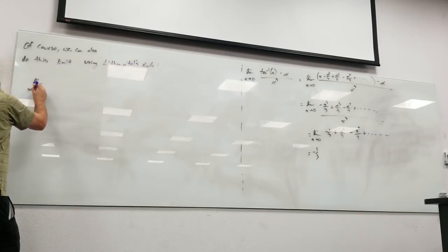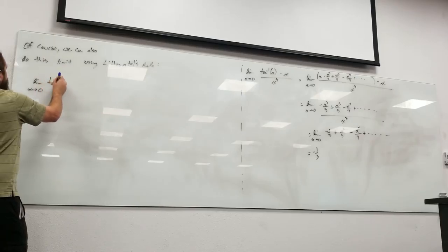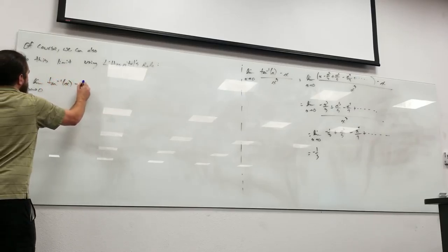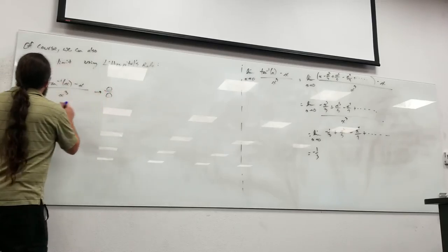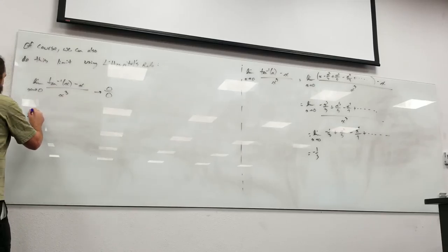So if I want the limit as x goes to zero of the inverse tangent of x minus x over x cubed, I do get an indeterminate form of zero over zero, so I can differentiate the top and the bottom.